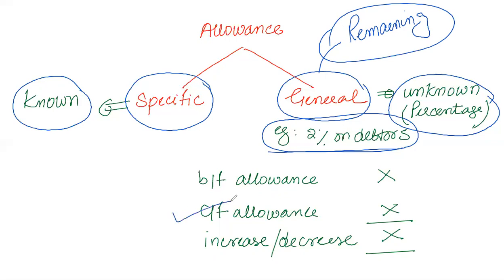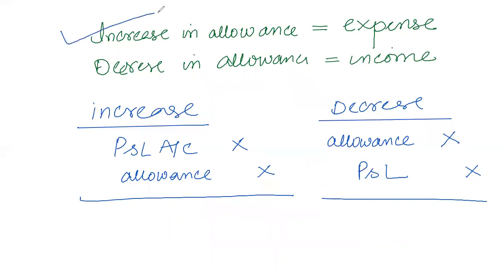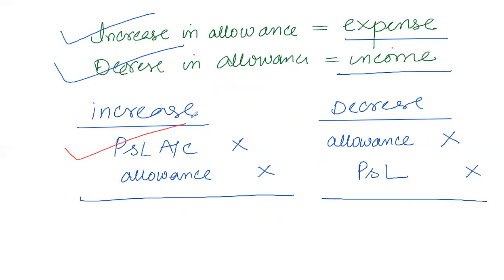After creating the allowance, we compare it to the opening balance of the allowance. As a result, we will either have an increase in allowance or a decrease in allowance. If the allowance increases — meaning this year's allowance is more than the previous year's — then an expense will be booked. If the allowance decreases, then income will be recorded. For an increase in allowance, we debit the Profit and Loss account and credit the Allowance account. For a decrease in allowance, we debit the Allowance account and credit the Profit and Loss account.